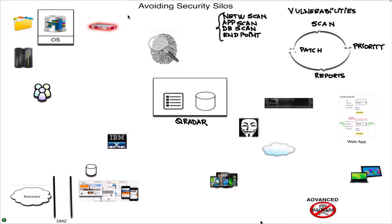What we do is take all those sources of vulnerabilities and feed them into QRadar's asset database. Once in that asset database, you can do things very simply like prioritize or sort all the vulnerabilities by which of them has been active recently — meaning, if there are some vulnerabilities that have not seen traffic related to them, I'm not saying you shouldn't fix them, but there might be other things with a higher priority.